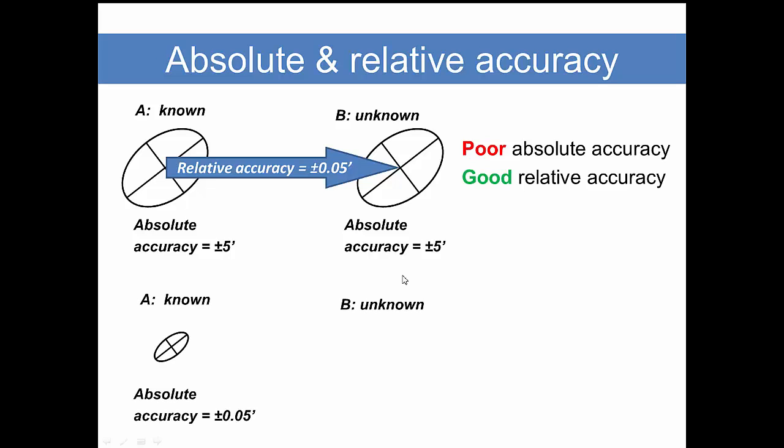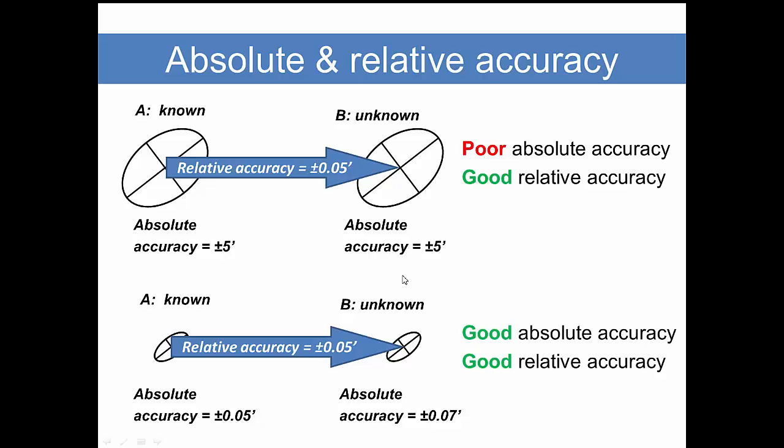If we start from a point of good absolute accuracy and then apply good relative accuracy, our new point is not going to be any better than our starting point, but we get a result that is built upon the absolute accuracy combined with the relative accuracy. In this case, we have both good absolute accuracy and good relative accuracy.